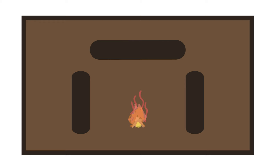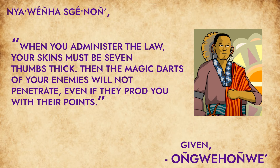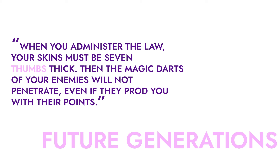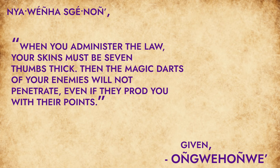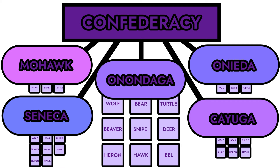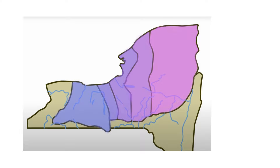Every decision in the Council was made for the benefit of the next seven generations. As the Great Peacemaker stated, 'When you administer the law, your skins must be seven thumbs thick. Then the magic darts of your enemies will not penetrate, even if they prod you with their points.' The Great Peacemaker was referring to the thumbs of people, meaning future generations. He wanted the members of the Grand Council to think for the good of the next seven generations when making decisions for the Confederacy. The Peacemaker follows the statement by explaining that if they succeed in this assignment, they cannot be touched by the enemies against democracy, such as hatred, evil, or simply other antagonistic nations. The system of government let all people and both genders of the Confederacy have a say, as well as all of the nations, no matter their physical might, as that didn't matter anymore in a society of peace. Clan mothers appointed chiefs to the nations; the people of the Longhouses made a clan, the clan made a nation, and the nations made a Confederacy. This is why the Haudenosaunee refer to themselves as the people of the Longhouse.